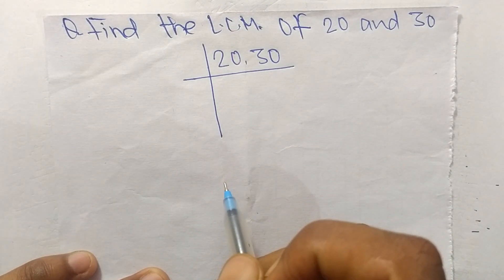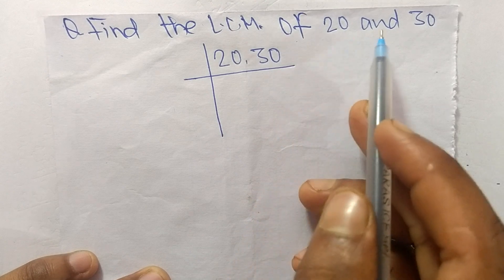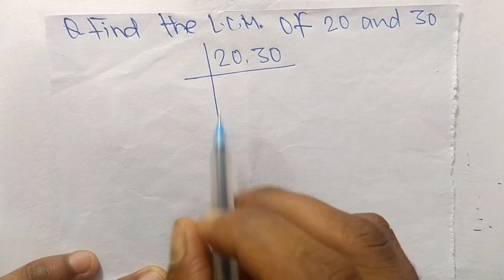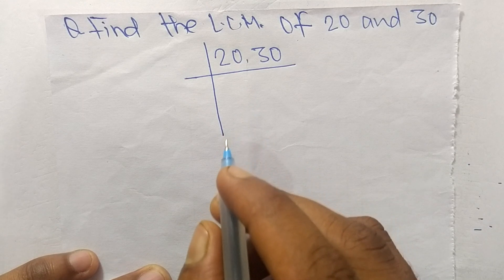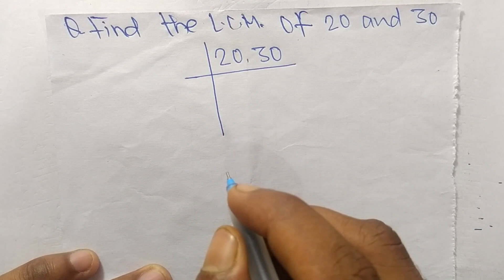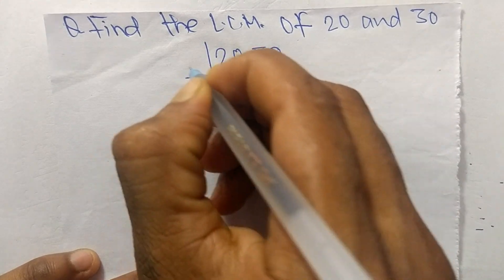Today in this video we shall learn to find the LCM of 20 and 30. To find out its LCM, first we have to choose the lowest number that can exactly divide 20 and 30.